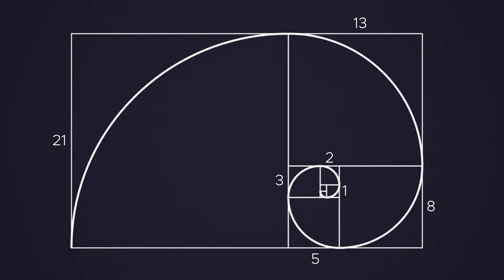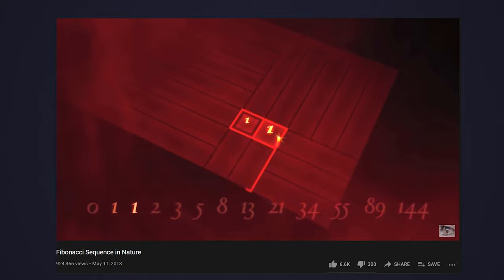There are many videos on YouTube that explain the meaning of the Fibonacci sequence, so I won't go too deep into it. Just note that the Golden Spiral comes from a sequence of numbers.